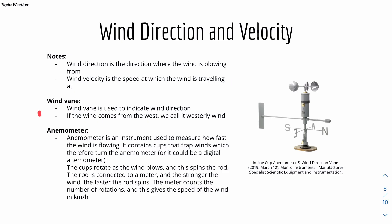Here's some notes on wind vane. Wind vane is used to indicate wind direction. If the wind comes from the west, we call it westerly wind, which basically relates to the wind direction. If the wind comes to the west, we call it westerly wind, then we have northerly wind, southerly wind, and easterly wind.